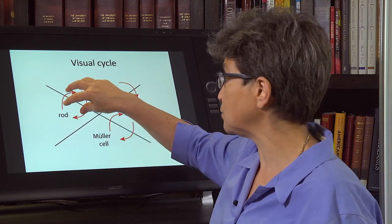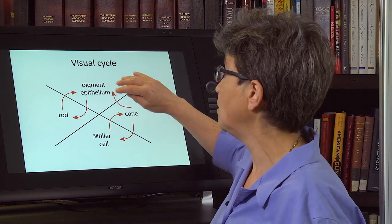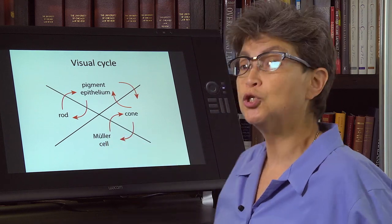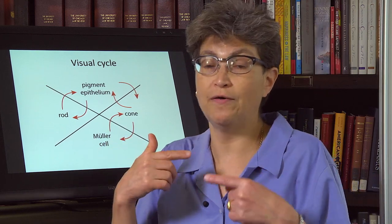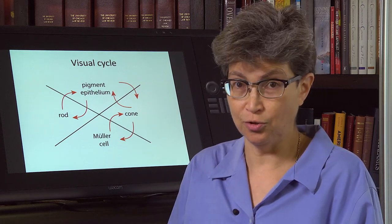Which re-isomerizes it and sends it back to the rod. So this is the visual cycle. The rod is dependent on the pigment epithelium. The cone is dependent on both the pigment epithelium and another type of glial cell, the Mueller cell, to recycle on a moment-by-moment basis every molecule of retinol.